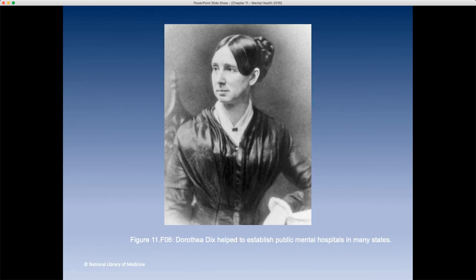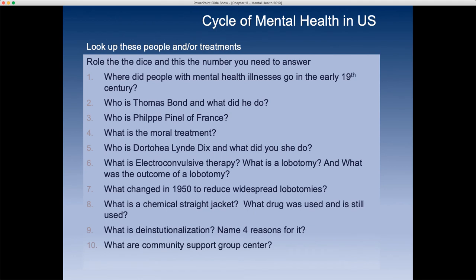Going back to review: where did people with mental health illnesses go in the early 19th century? On page 295 you'll find the answer — almshouses and poor houses. Thomas Bond opened the first Pennsylvania Hospital. You can read about Philippe Pinel's moral treatment in France, and then Dorothy Dix's advocacy movement. Electroconvulsive therapy and lobotomies are covered on page 296. The changes that happened in the 1950s are also covered. A chemical straitjacket refers to the use of drugs like Valium to sedate patients. The four reasons for deinstitutionalization involve Medicare, Medicaid, budgets, idealism, legal considerations, and the development and marketing of antipsychotic drugs such as antidepressants like Prozac. Deinstitutionalization is on page 297, and community support groups are on page 298.